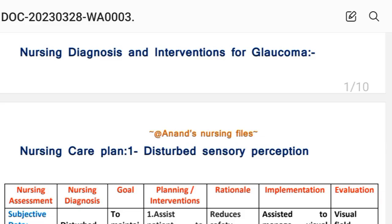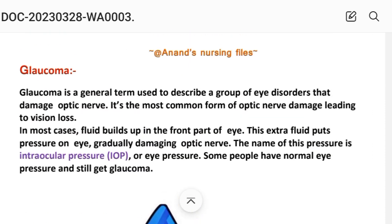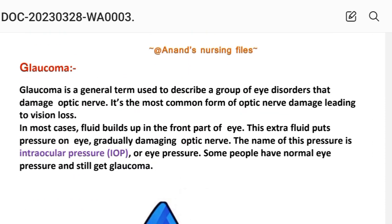Friends, here we will learn a total of five nursing care plans on glaucoma, covering different nursing process steps: nursing assessment, diagnosis, goal, planning, intervention, rationale, implementation, and evaluation. First, a short introduction — what is glaucoma? Glaucoma is a general term used to describe a group of eye disorders that damage the optic nerve. It is the most common form of optic nerve damage leading to vision loss. In most cases, fluid builds up in the front of the eye, putting extra pressure on the eye and gradually damaging the optic nerve. The name of this pressure is intraocular pressure (IOP), or eye pressure.